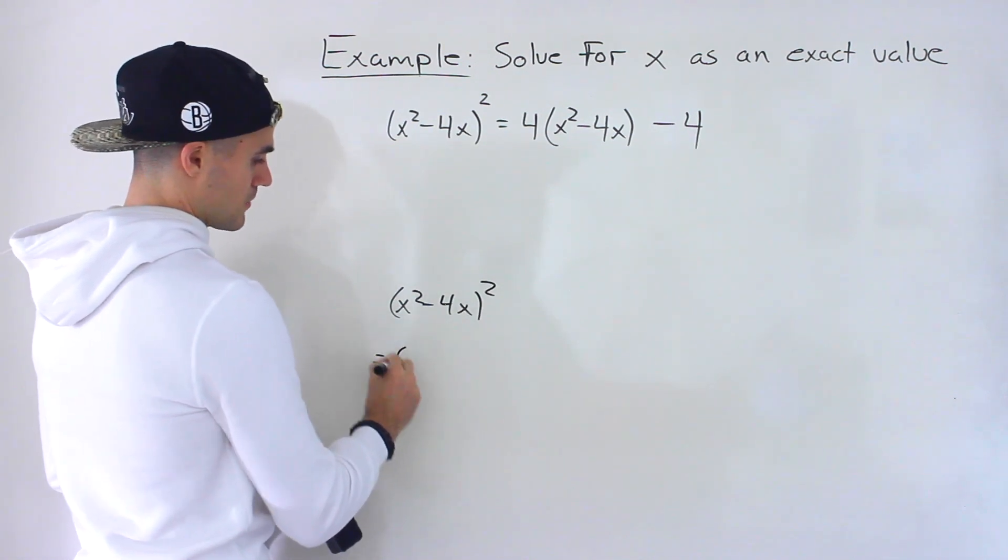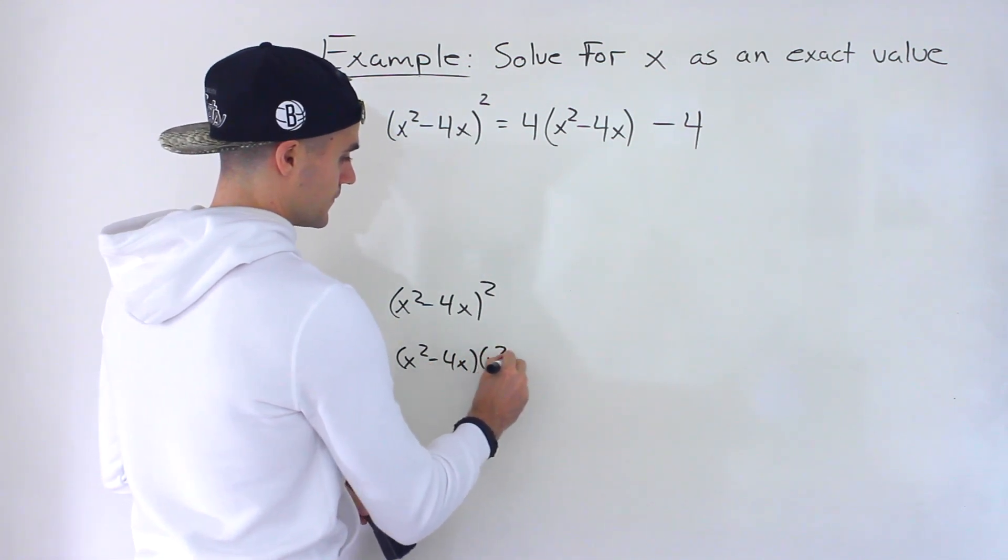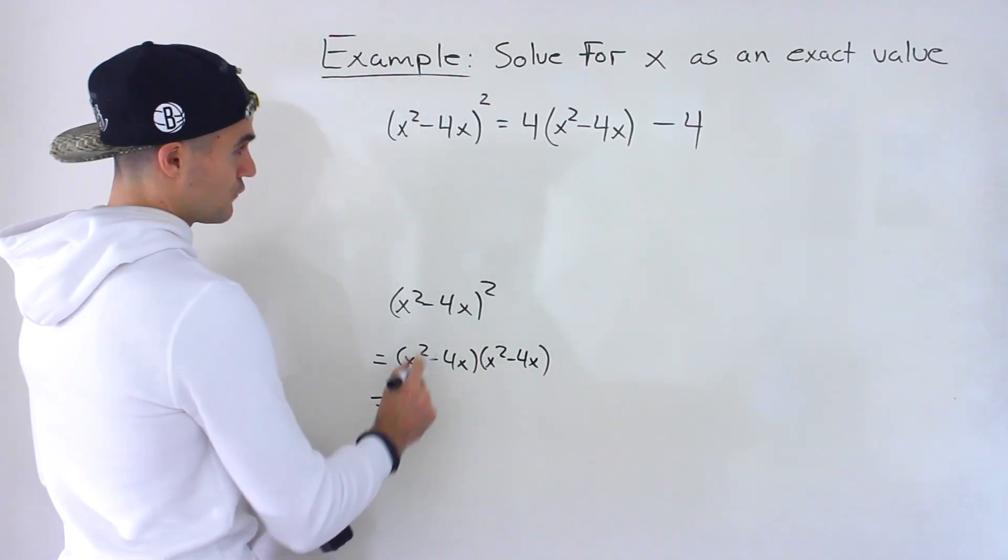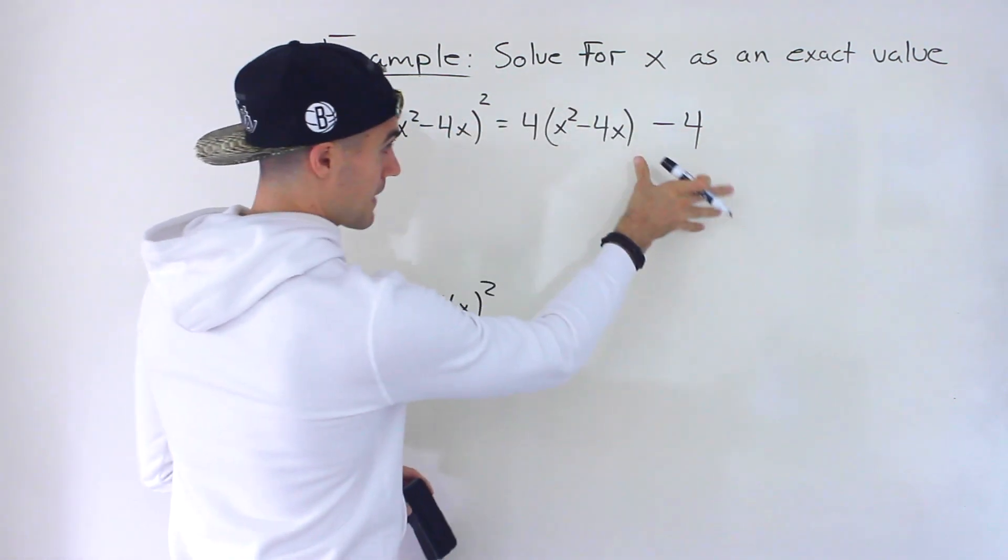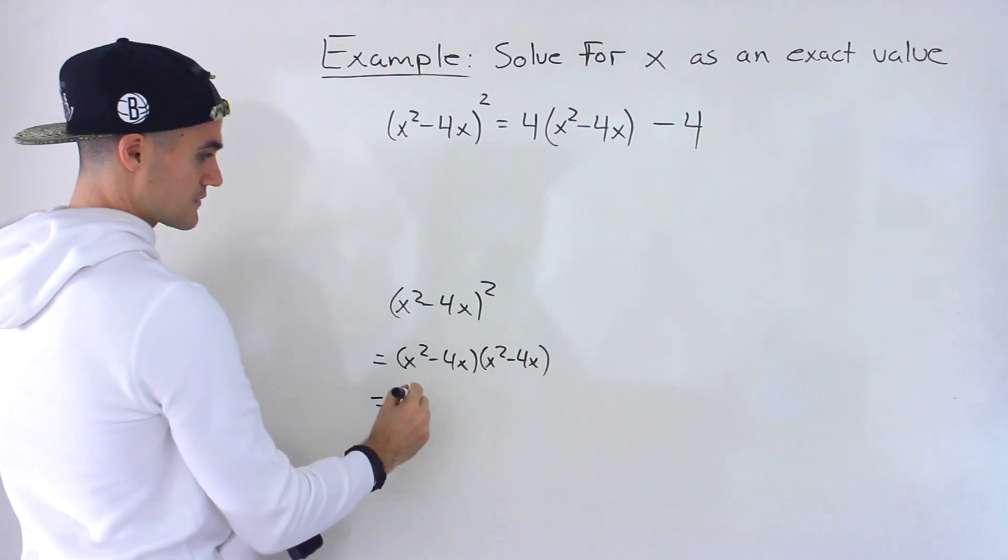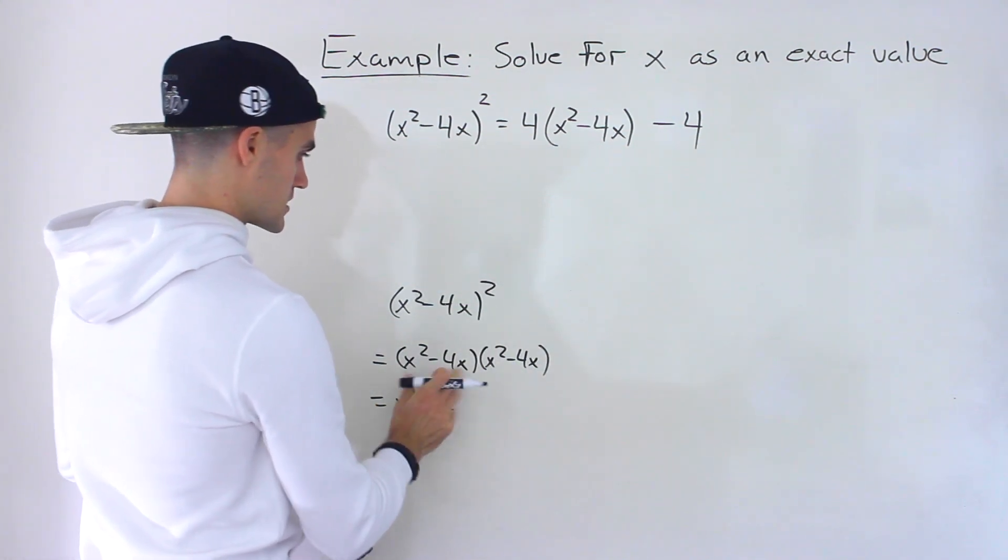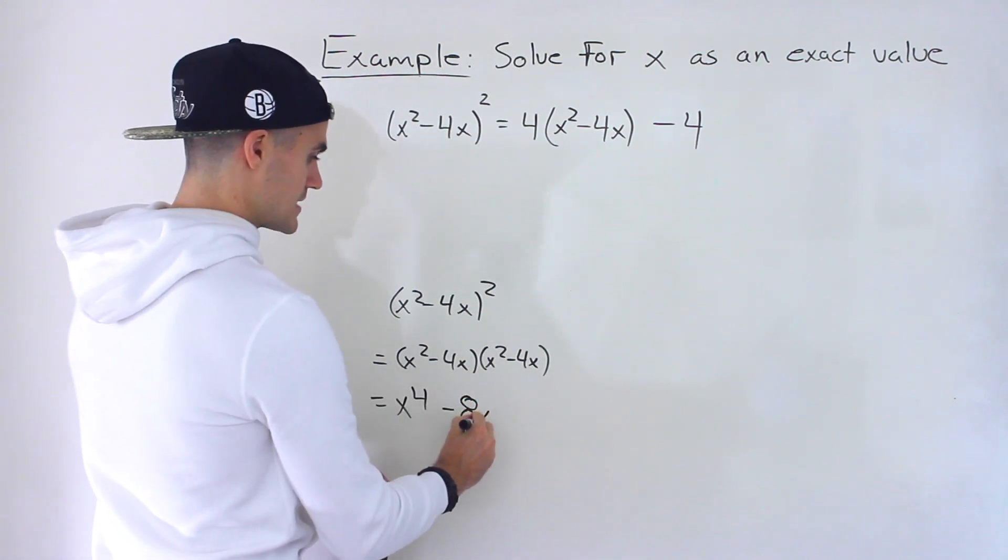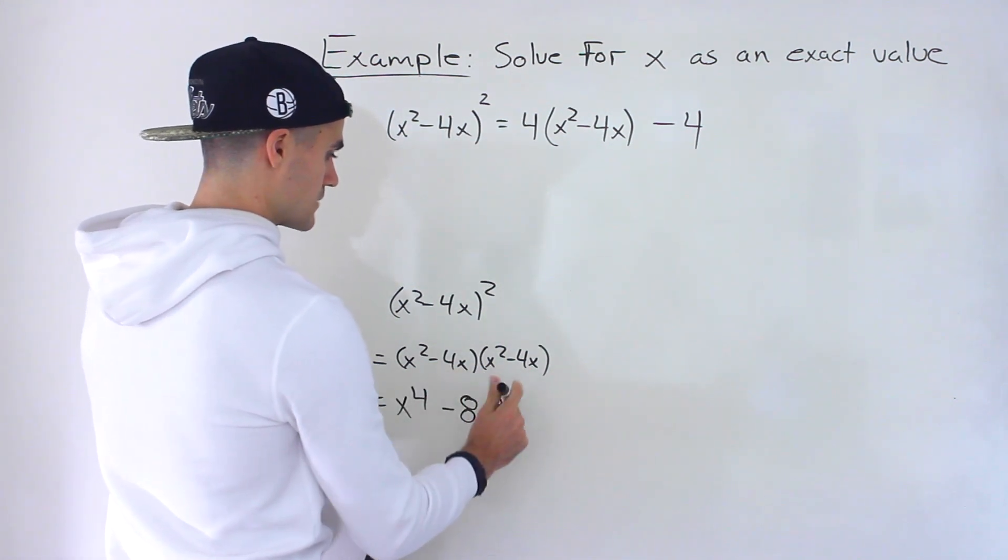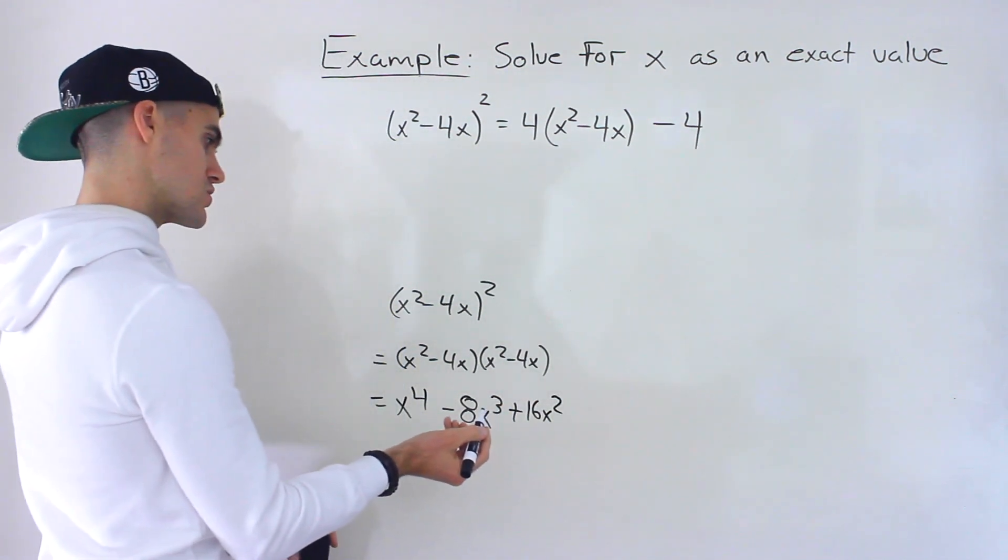So this x squared minus 4x to the power of 2 we can rewrite this as that. Right so if we foil out this left side that's what we're doing we're expanding we would expand this and then we'll bring it all to the left side. So this would end up being x to the 4 minus 8x cubed and then this times this would be plus 16x squared.